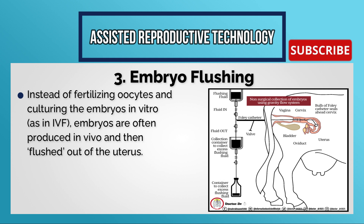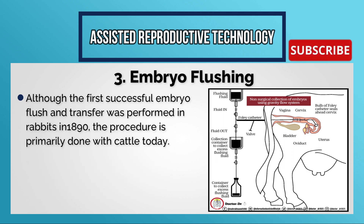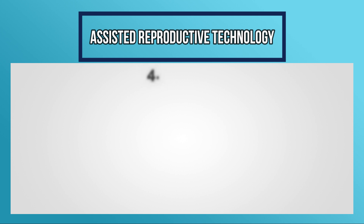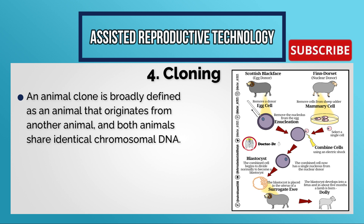Embryo flushing: instead of fertilizing oocytes and culturing embryos in vitro as in IVF, embryos are often produced in vivo and then flushed out of the uterus. Embryo flushing is much more prevalent and cost-efficient than IVF for the production of embryos. Although the first successful embryo flush and transfer was performed in rabbits in 1890, the procedure is primarily done with cattle today.